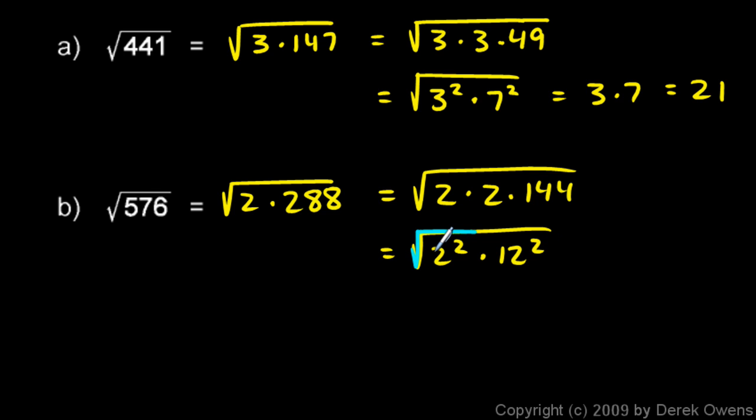And you should see that the square root of 2 squared is 2, and the square root of the 12 squared is 12. So I get 2 times 12. And the answer is 24.